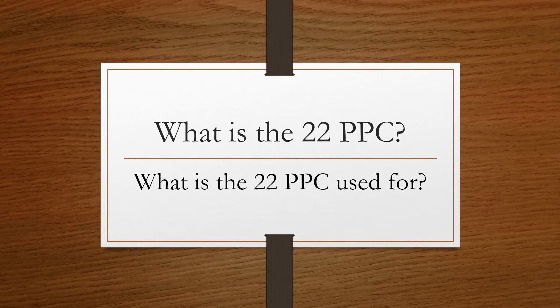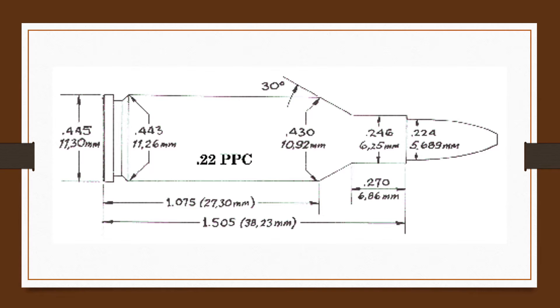The .22 PPC was developed in 1974 by Dr. Lewis Paul Palmizio and Ferris Pendale, primarily for use in bench rest cartridges. Although originally a wildcat, Sako of Finland introduced commercial rifles and ammunition late in the 1980s. In 1987, Norma followed suit with loaded ammunition. Since it is an American development, it is listed as a current American rifle cartridge rather than a European cartridge.